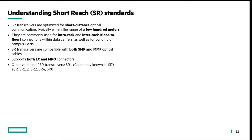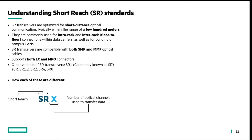The other variants of SR transceivers are SR1, which is commonly known as SR or ESR, SR1.2, SR2, SR4, and SR8. The SR part is constant, meaning short reach. The last part — 1, 1.2, 2, 4, etc. — signifies the number of channels being used to transfer the data.